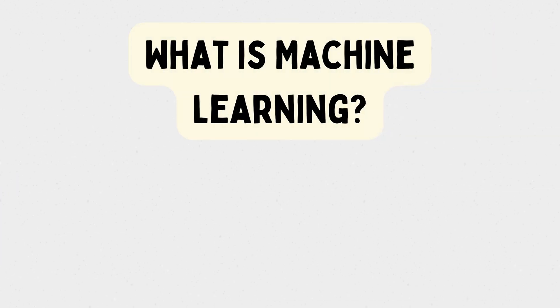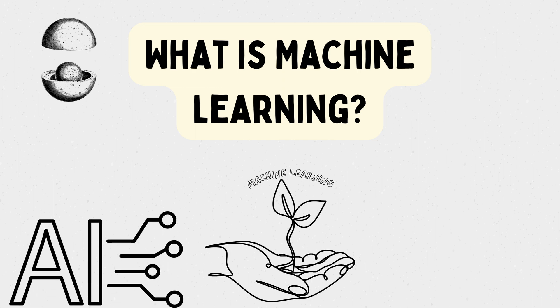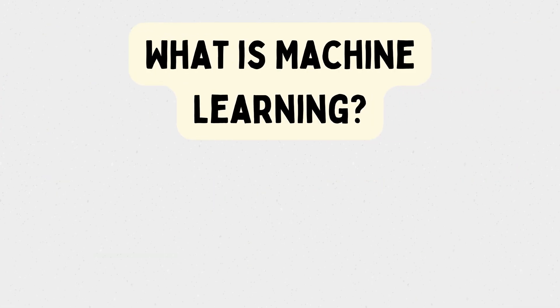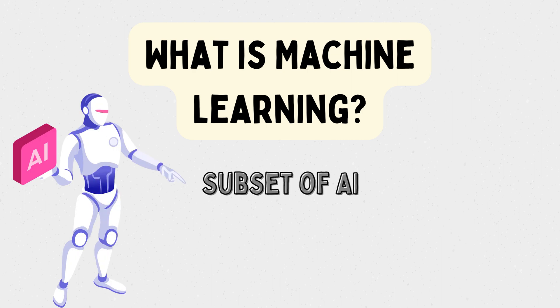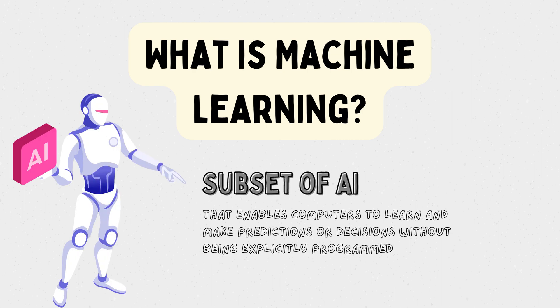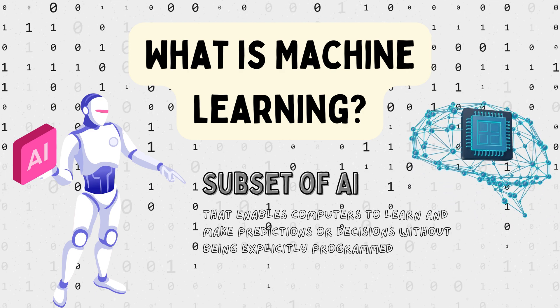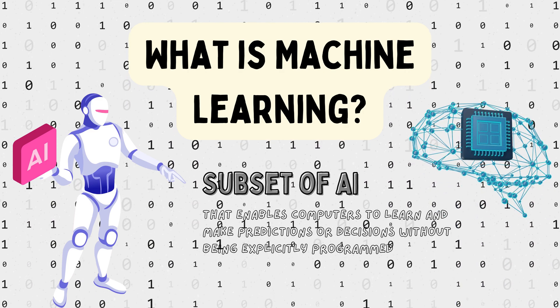But what exactly is machine learning? At its core, machine learning grew out of the field of artificial intelligence. They realized that the only way a machine could perform more difficult tasks, like autonomous driving, was to let the machine learn by itself. So, machine learning is a subset of artificial intelligence that enables computers to learn and make predictions or decisions without being explicitly programmed. It's all about algorithms and data, and it's changing the way we interact with technology.